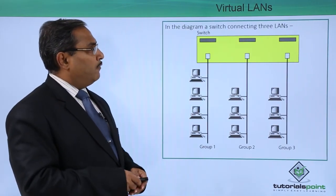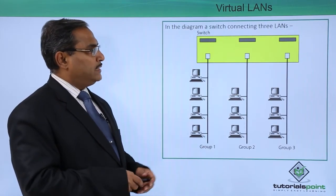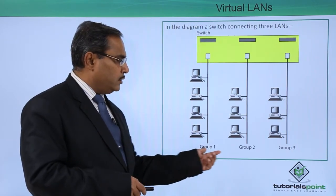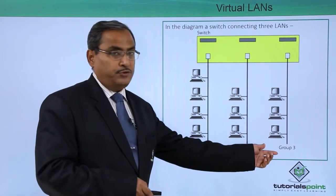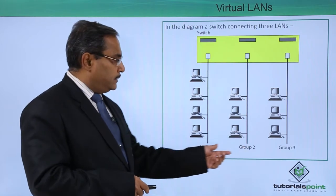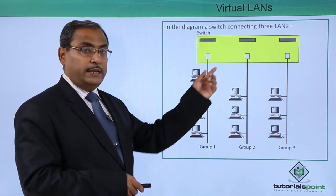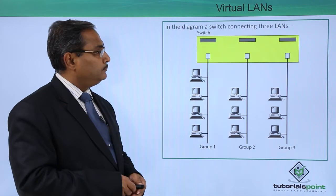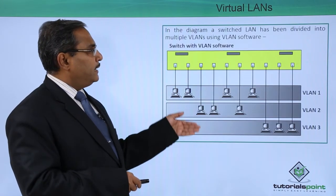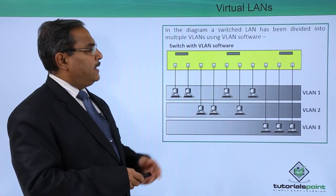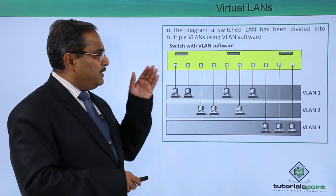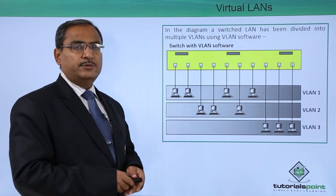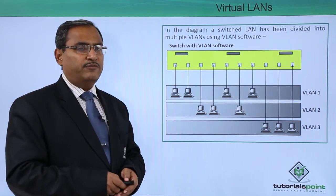The diagram of a switch is there which is connecting three LANs — that is group one, group two, and group three. The three LANs are there but they are connected with the same switch. A switched LAN has been divided into multiple virtual LANs using VLAN software.